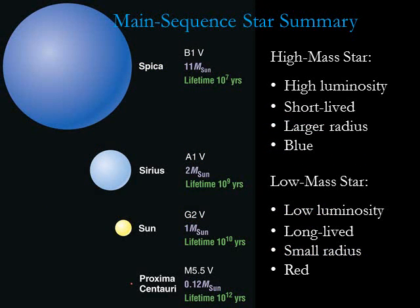This figure compares four main sequence stars, showing how they differ because of their different masses. The high mass stars are large, blue, bright, and short-lived. The low mass stars are small, red, dim, and long-lived.